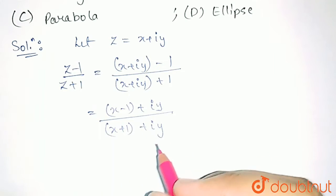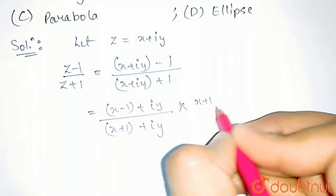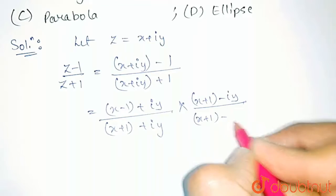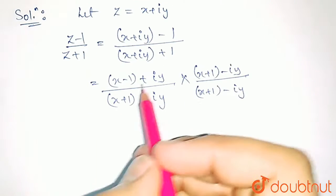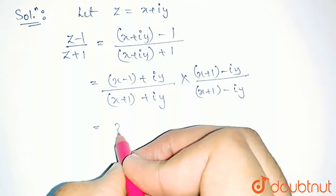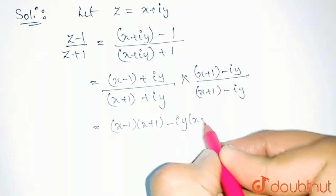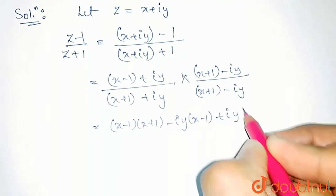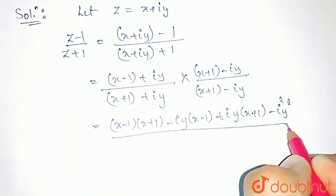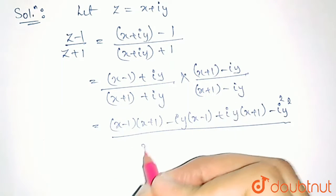To further solve this, we will multiply and divide by (x plus 1 minus iota y) — we will rationalize this. Multiplying the terms in the numerator, we get (x minus 1)(x plus 1 minus iota y) plus iota y(x plus 1 minus iota y), divided by the denominator which is of the form (a plus b)(a minus b), that is a squared minus b squared.